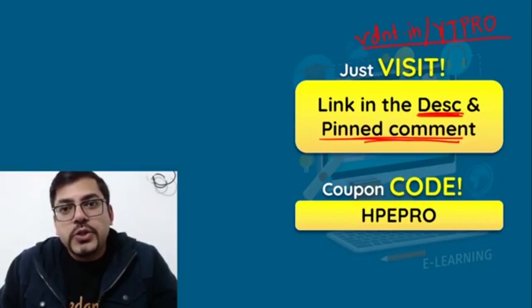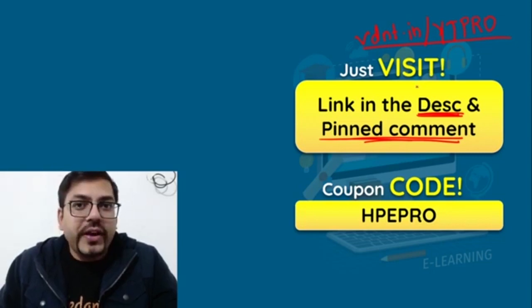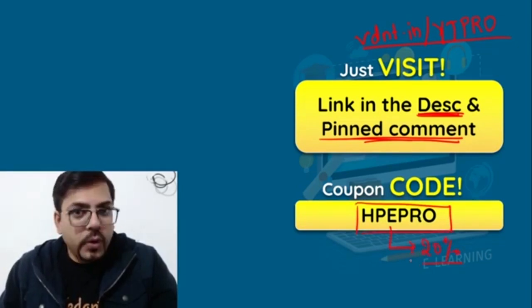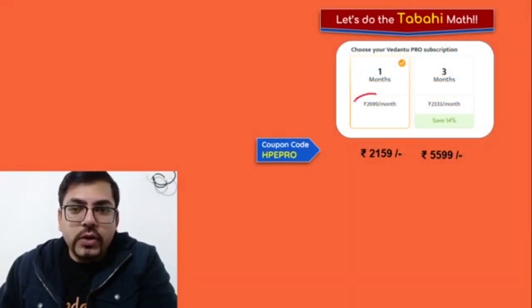Just click on this link. Once you click on this link, you'll get all the details. Before doing the final payment, you can use the coupon code HPEPRO. This coupon code will allow you an extra 20% discount.